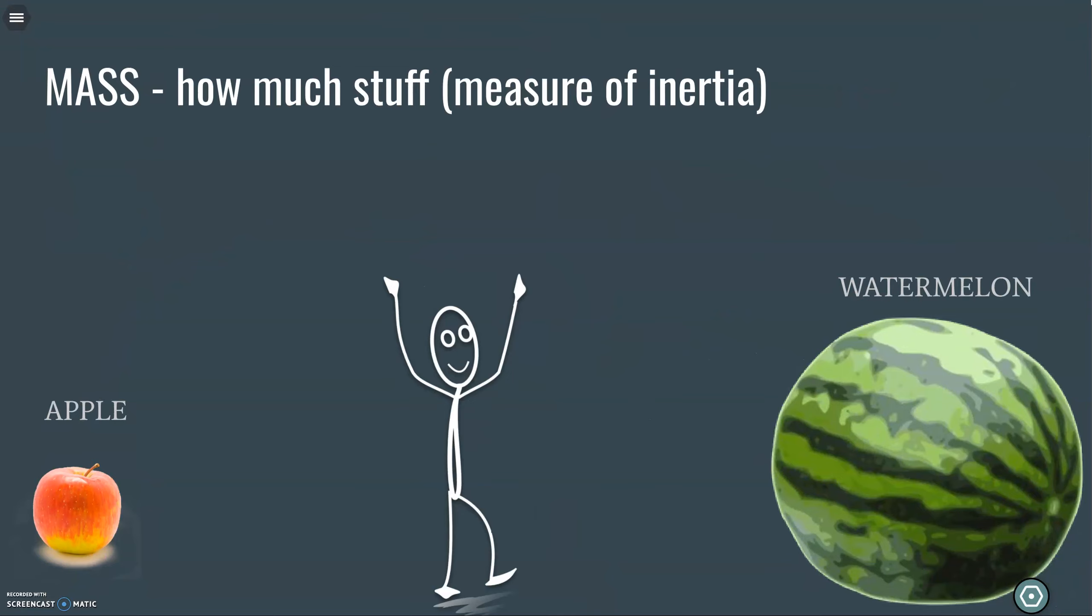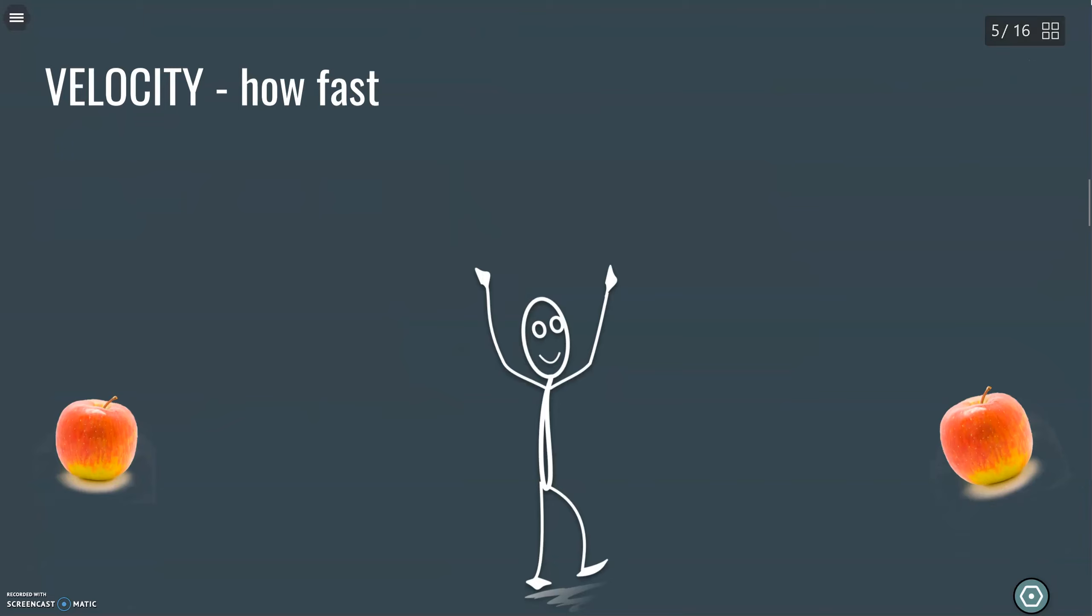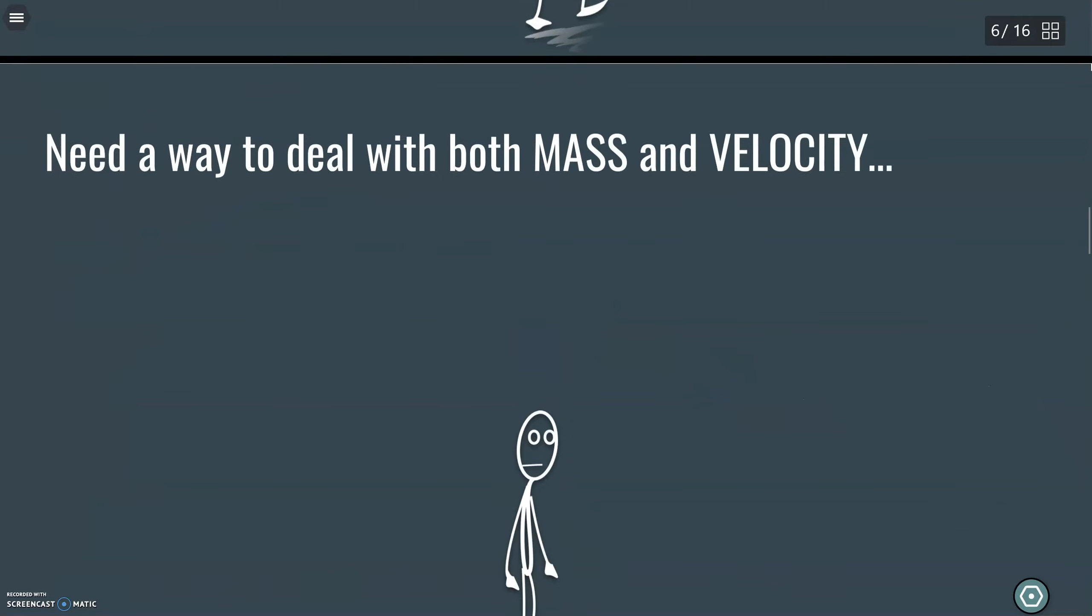The mass, how much stuff, the actual measure of inertia, how hard it is to stop. Watermelon had a whole lot. The apple had a little. And the velocity, the lobbed apple had a little bit of velocity. But the one that got whipped at your face super fast, that had a whole lot of velocity. So we need to take both of these things into account.